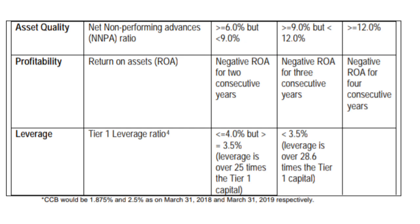On asset quality, banks with net NPA of more than 9.75% fall under the third threshold level. On profitability, banks with negative returns on assets for 2, 3, and 4 consecutive years fall under threshold I, threshold II, and threshold III respectively.